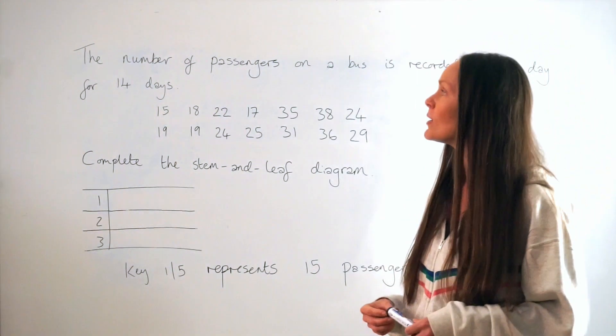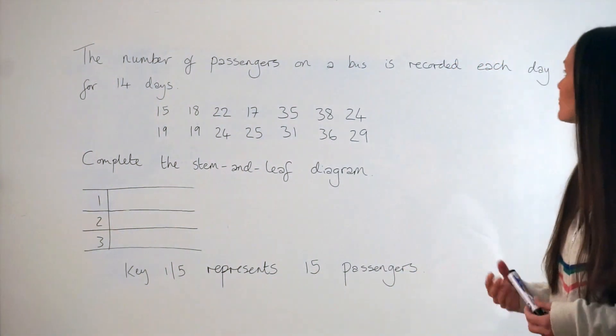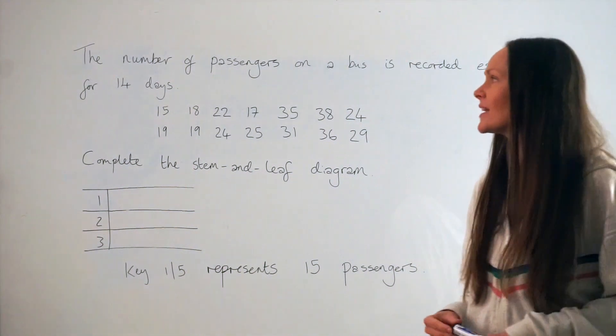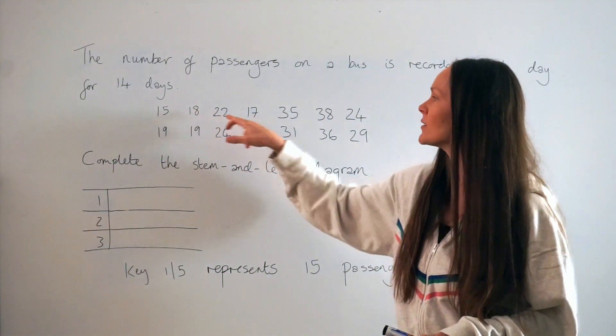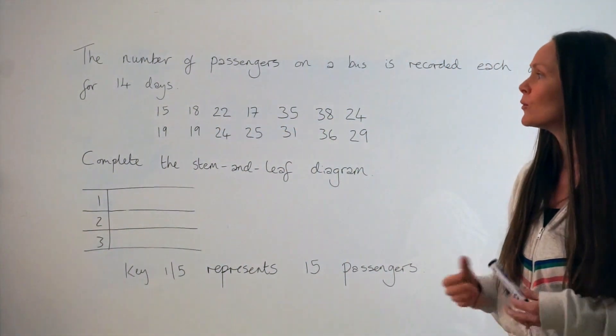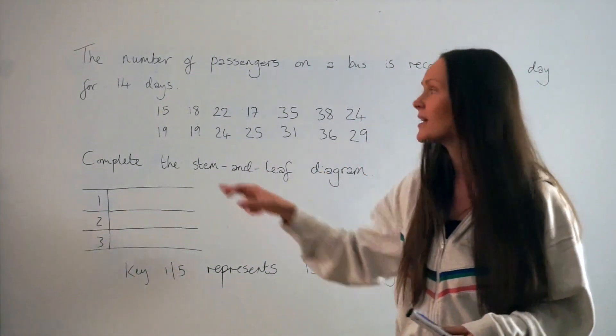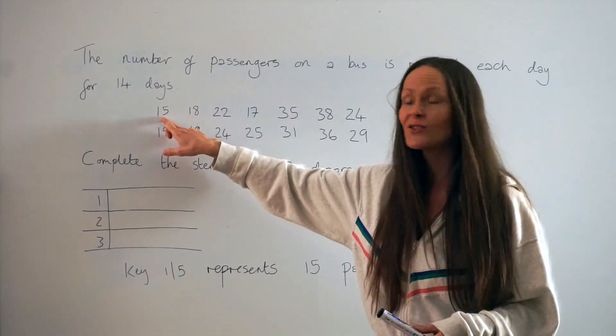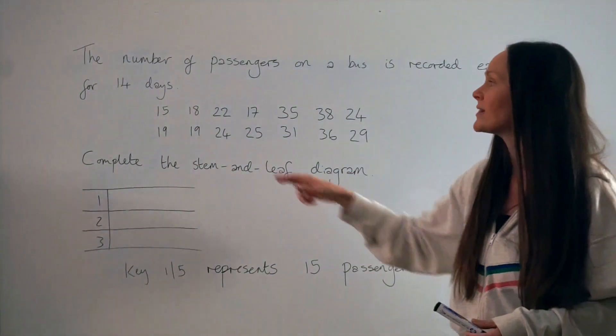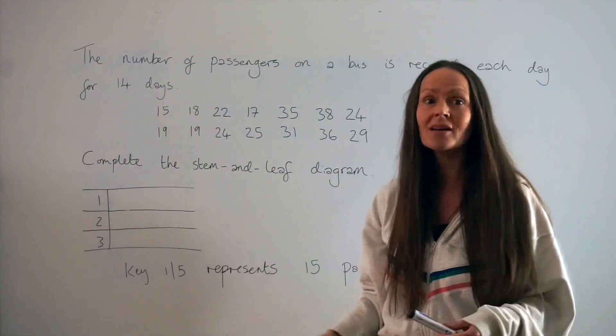In this question it says the number of passengers on a bus is recorded each day for 14 days. And here are the numbers that are recorded. So all they mean is that on one day there were 15 passengers on the bus, on a different day there were 18 passengers on the bus, and so on.